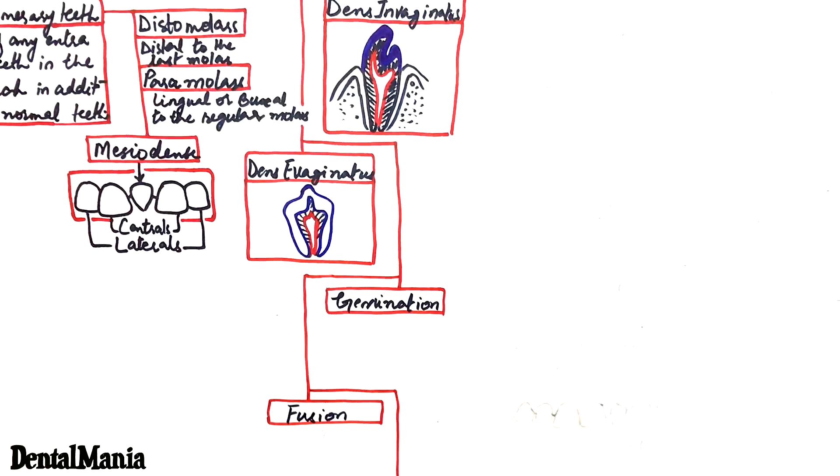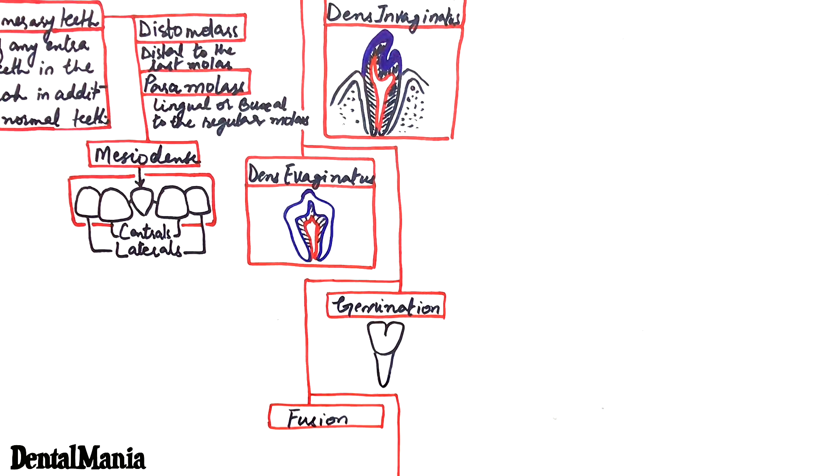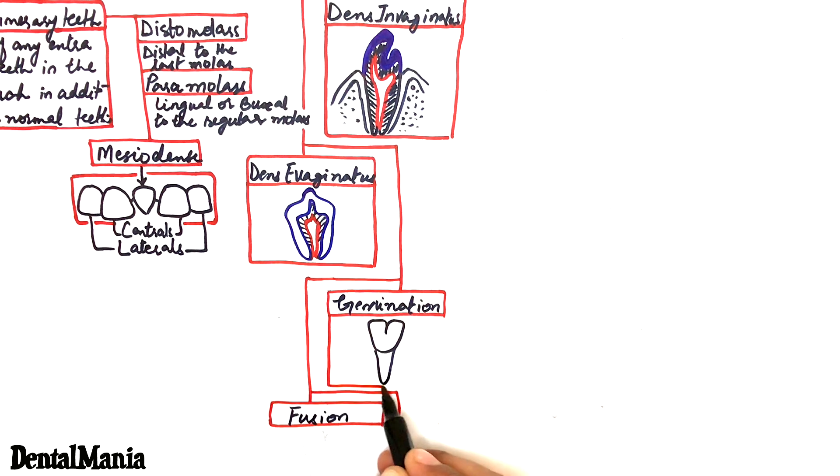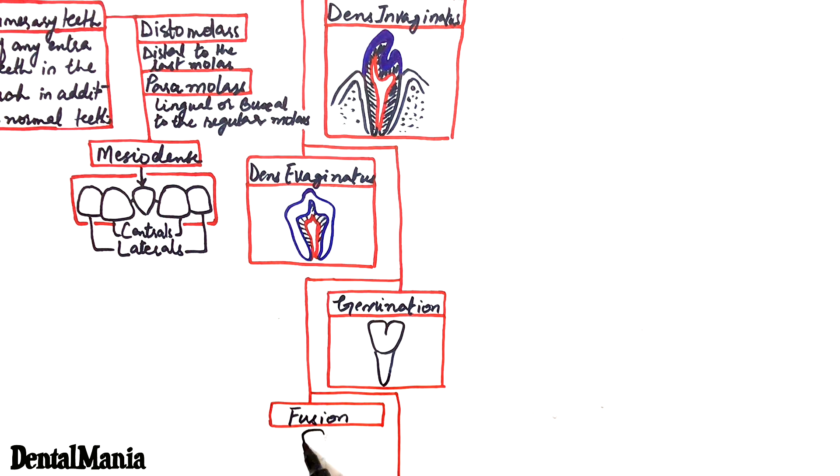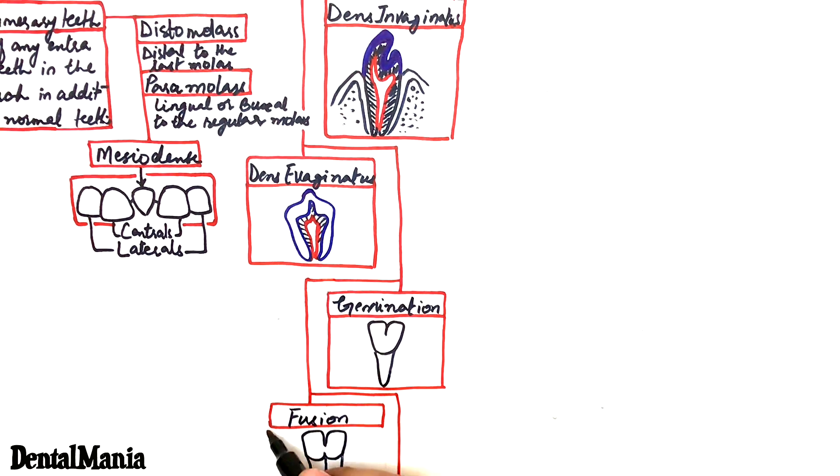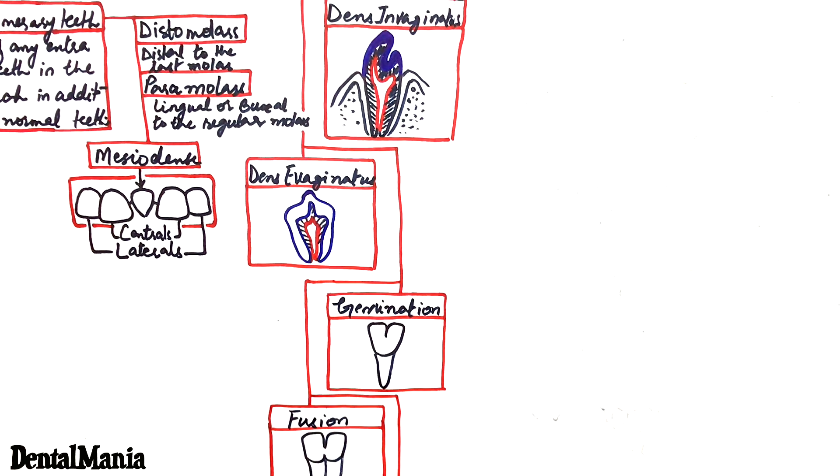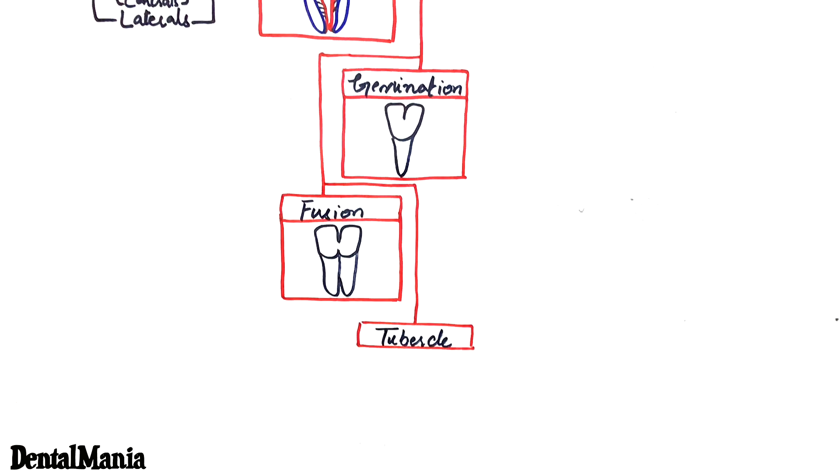Gemination is characterized by a partial cleavage of a single tooth germ resulting in the formation of an anomalous tooth with two partially separated crowns and a single root. Gemination often clinically resembles fusion. Fusion can be defined as the union of two adjacent and normally separated tooth germs at the level of dentine during development.